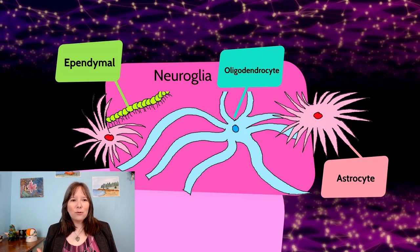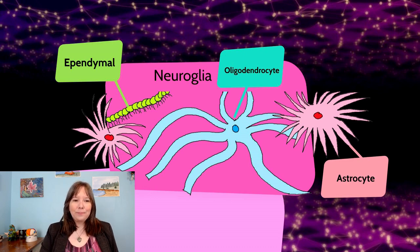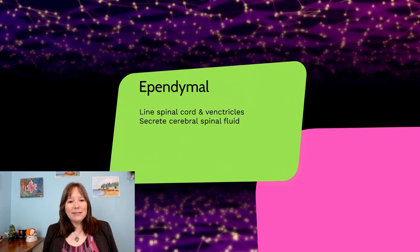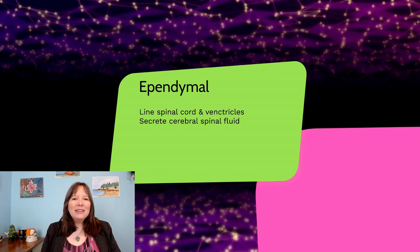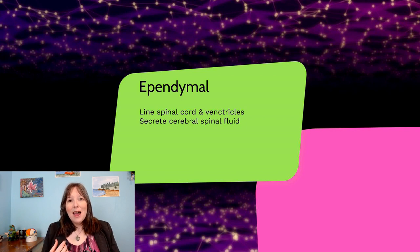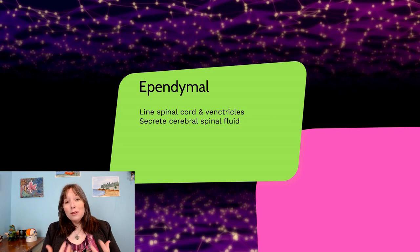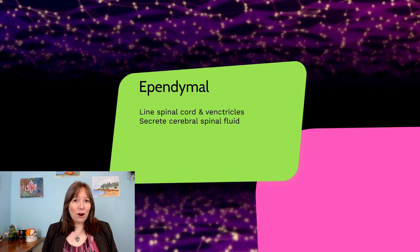Three that we're going to focus on for this course are the ependymal cells, the oligodendrocyte cells, and the astrocyte cells. The ependymal cells — shown here for illustrative purposes — line the spinal cord as well as the ventricles in the brain. They help with the secretion of cerebrospinal fluid and help with the cushioning and protecting of our nervous system, so although they're not relaying neurological information, they're protecting and enhancing our nervous system.